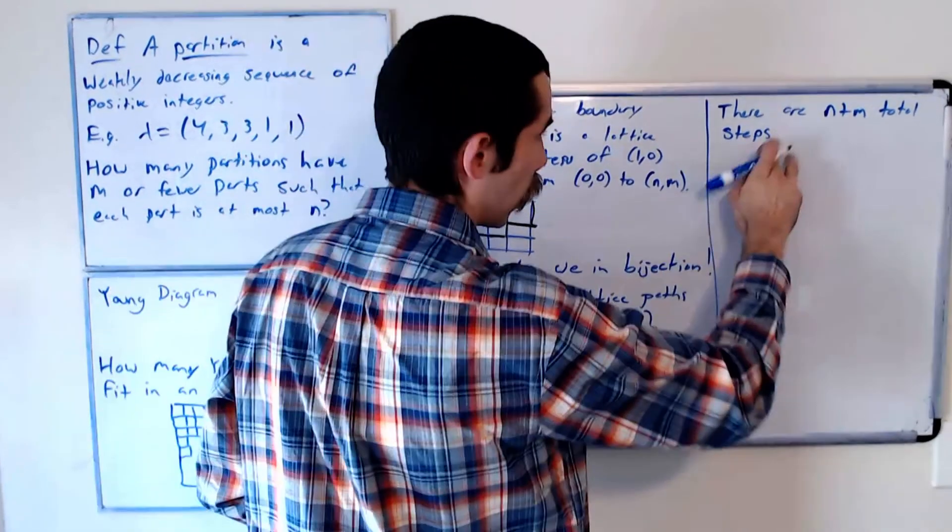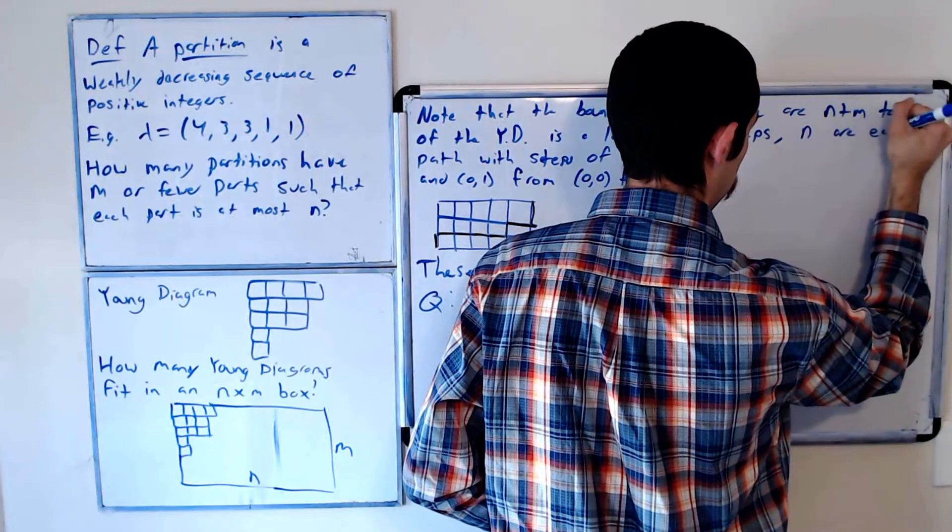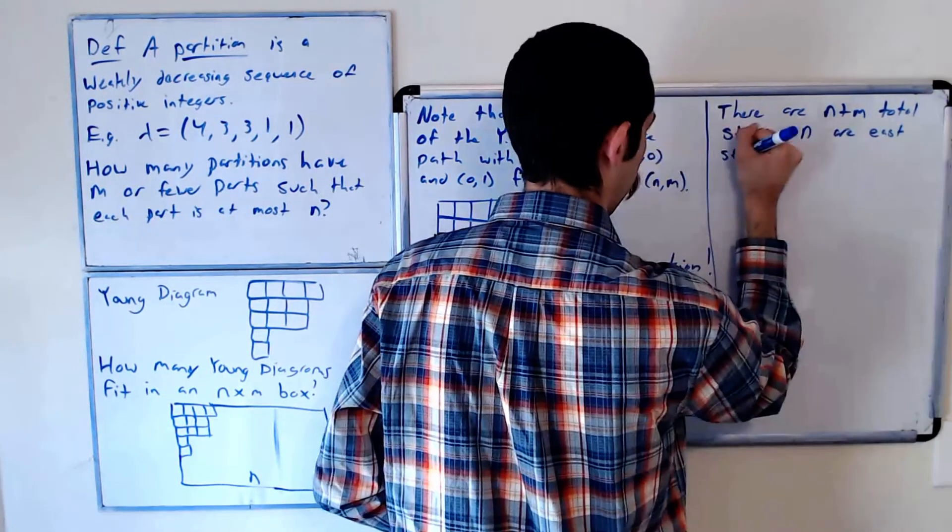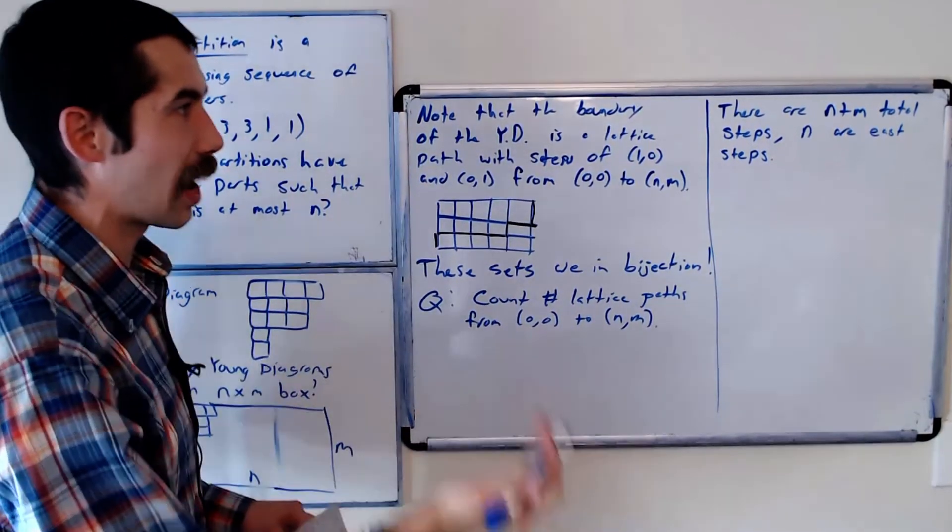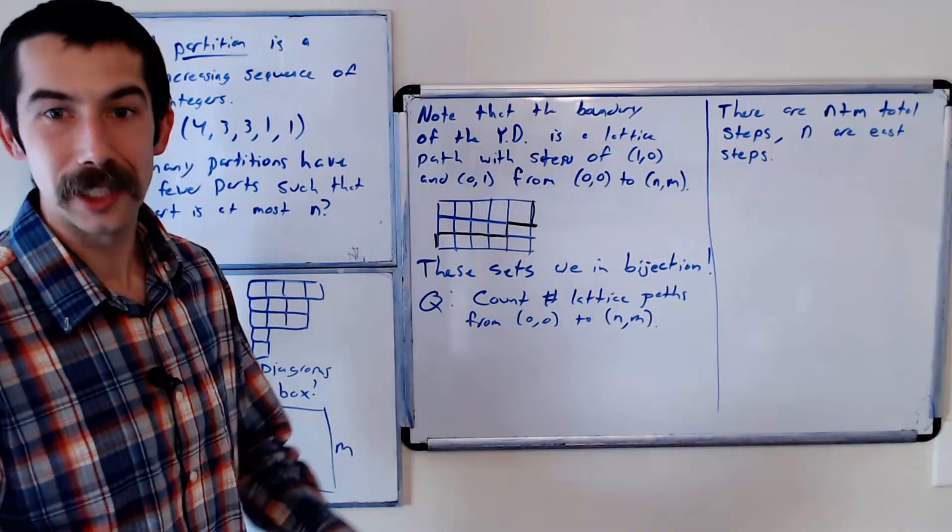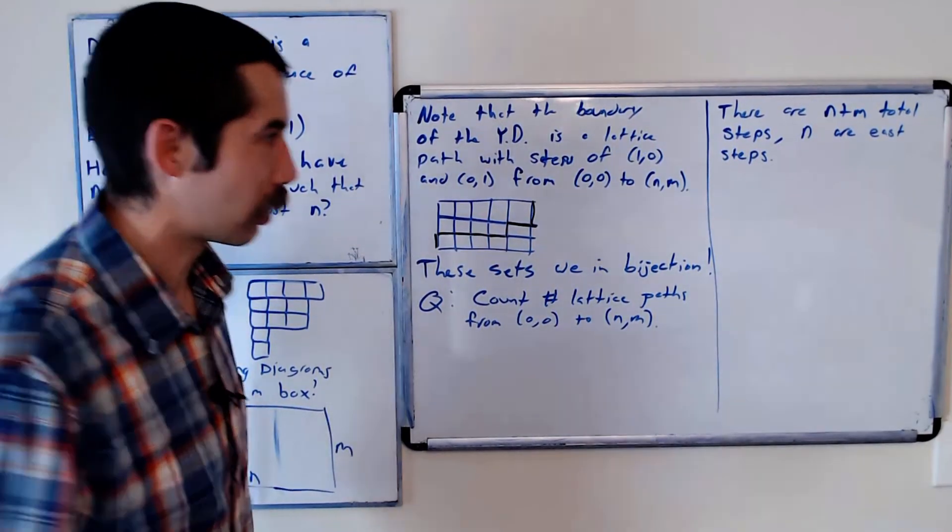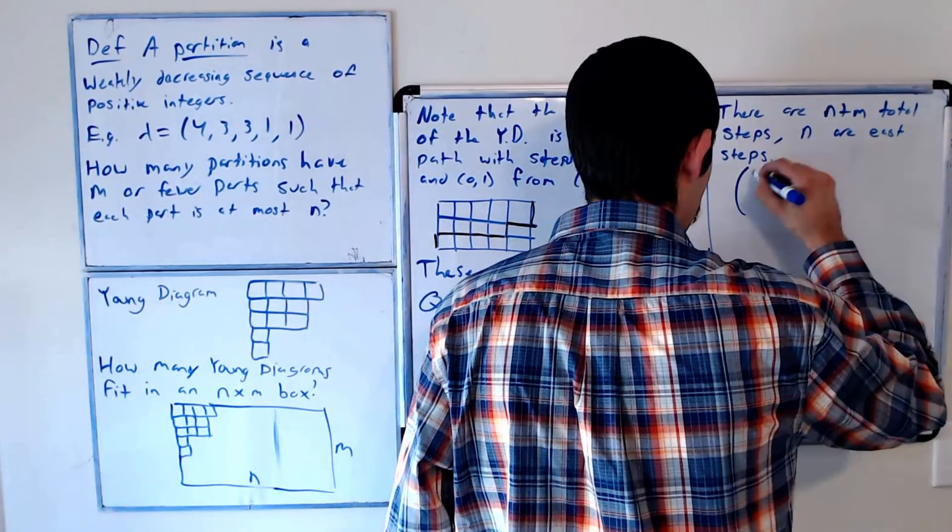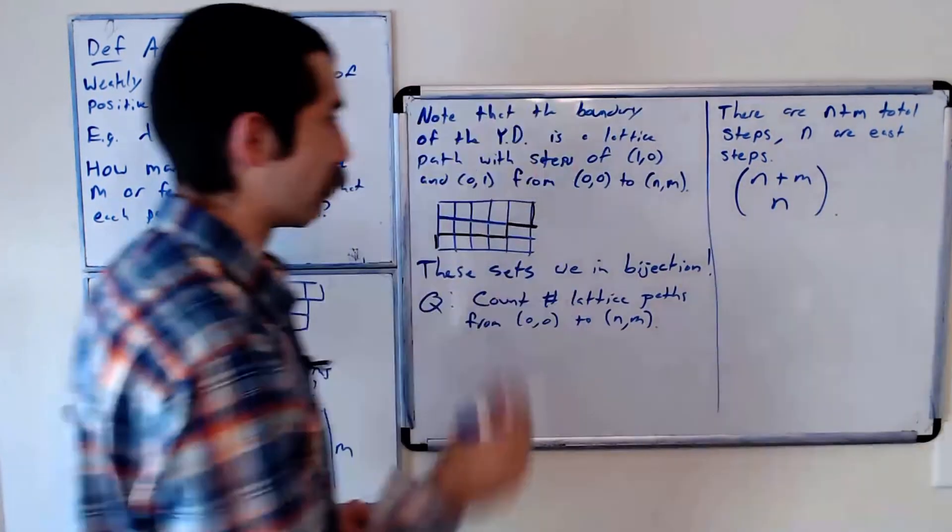N of which are east. So out of the N plus M total steps, you need to choose the N of them that will be east steps; the remainder will be north. So the total is (N+M) choose N. And that's the final answer.